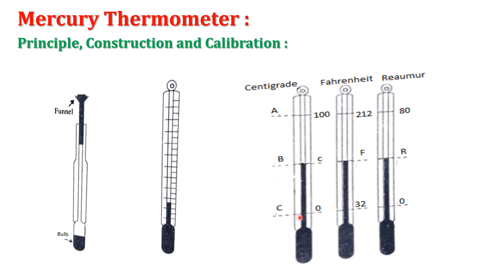For marking the lower fixed point, the mercury thermometer is kept in an ice chamber with the mercury in a vertical position. The bulb and the longer part of the stem should remain inside the ice chamber. When mercury attains a stationary level in the ice chamber, that point is marked as the lower fixed point.